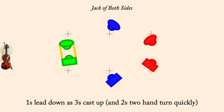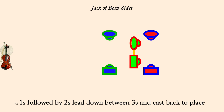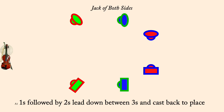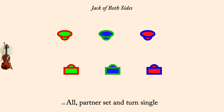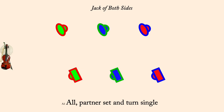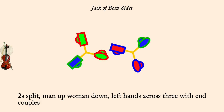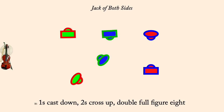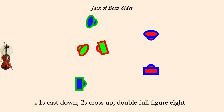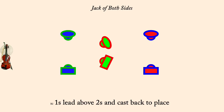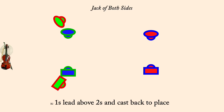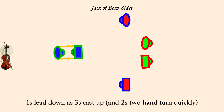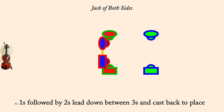Ones followed by twos lead below threes and cast back to places. Ones lead down as threes cast up. Ones followed by twos lead below threes and cast back to place.